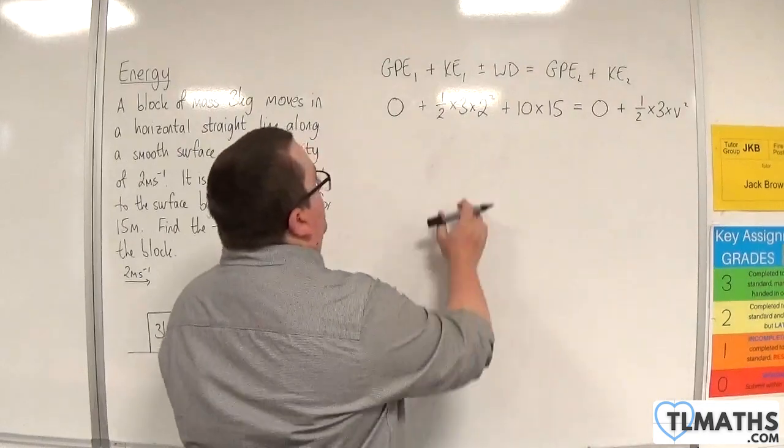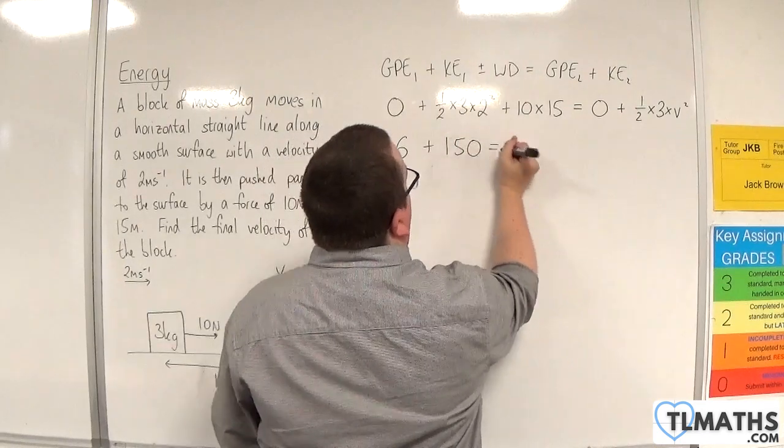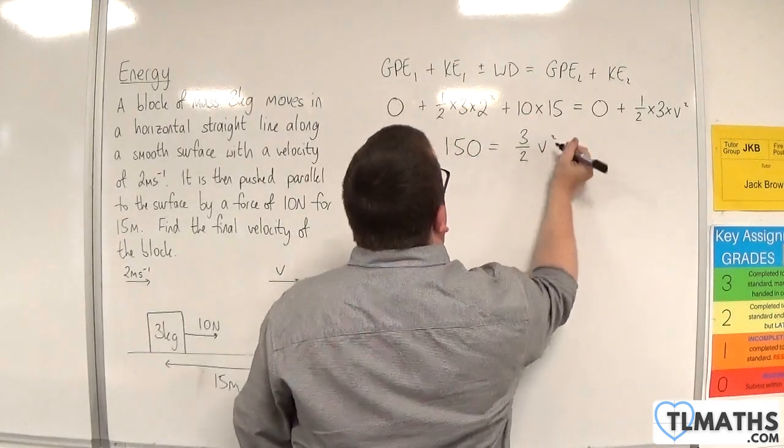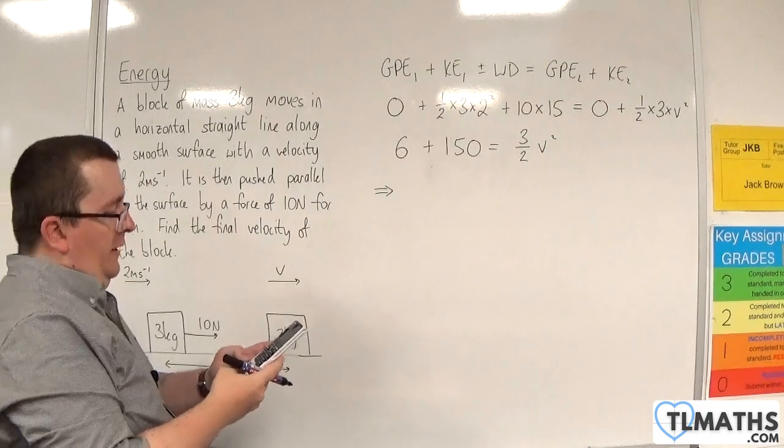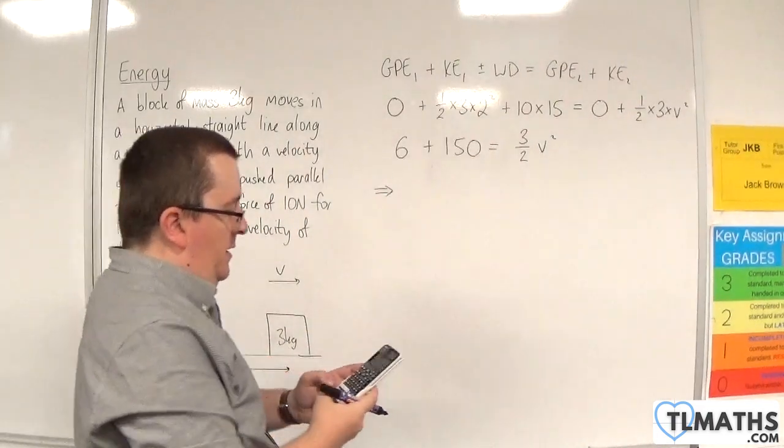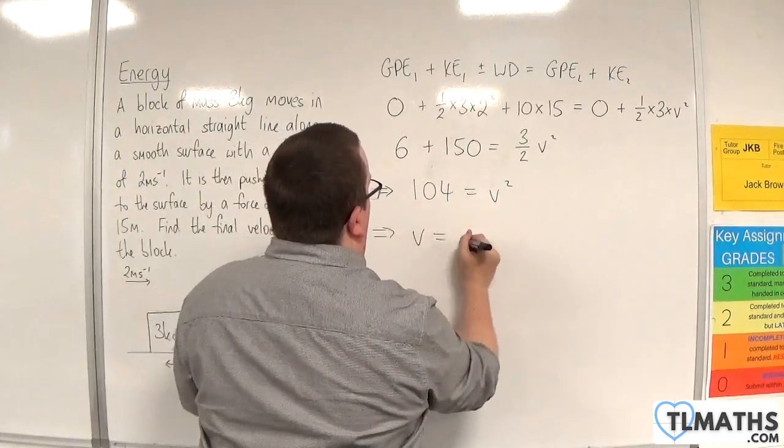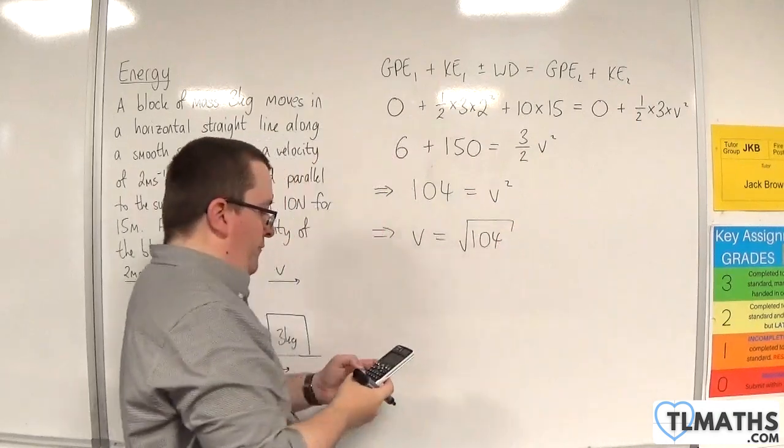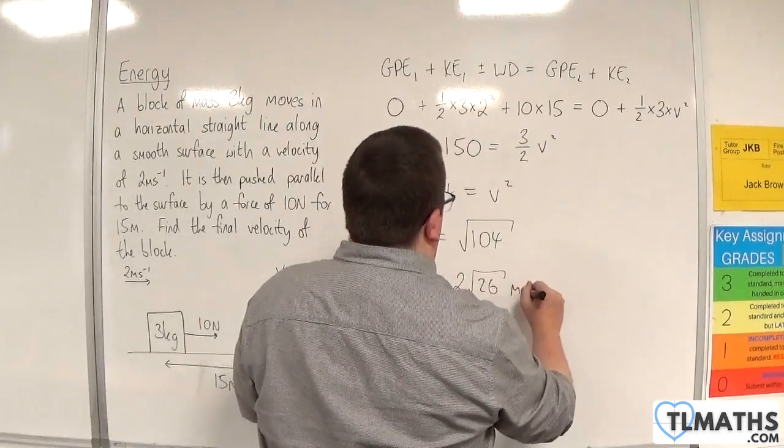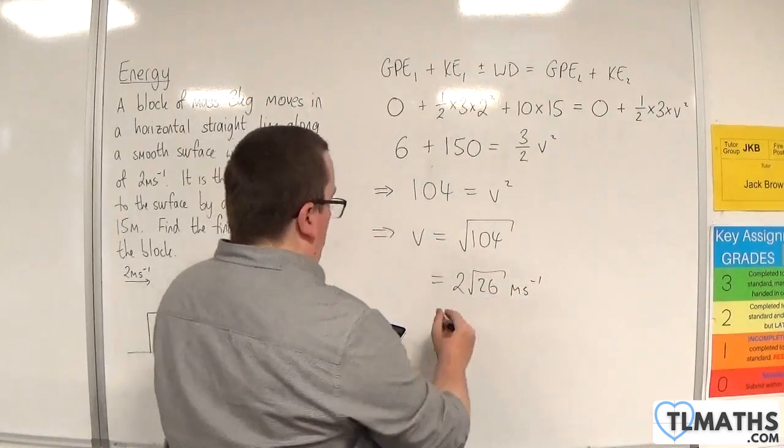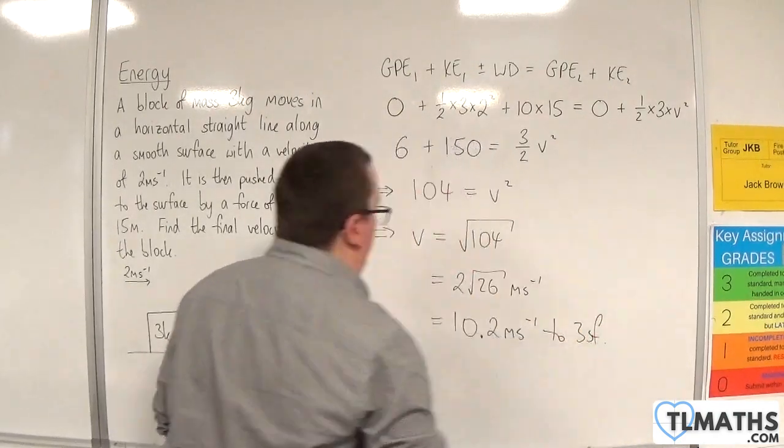So we have six plus 150 is equal to three halves V squared. So 156 divided by three halves is 104. So V will be the square root of 104, which is 2 root 26 meters per second, which is 10.2 meters per second to three significant figures.